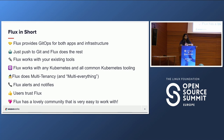Here are some statements about Flux we like to call "Flux in short." Flux provides GitOps for both apps and infrastructure. You can use Flux with Flagger, which allows you to deploy apps with canaries, feature flags, and A/B rollouts. You can also use it to manage any Kubernetes resource, and infrastructure and workload dependency management is built in. You just push to Git and Flux does the rest — it manages deployments through automatic reconciliation, that sync-and-apply loop. It works with Git providers like GitHub, GitLab, and Bitbucket, S3-compatible buckets, all major container registries, all CI workflow providers, and OCI repositories.